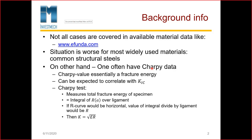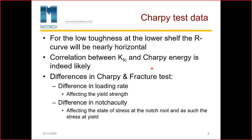If the R curve would be horizontal, the value of the integral divided by the ligament would be R. Your plane strain fracture toughness K becomes equal to the square root of the energy and the integral R. For low toughness at the lower shelf, the R curve will be nearly horizontal, and there is a correlation between K1C and Charpy energy.